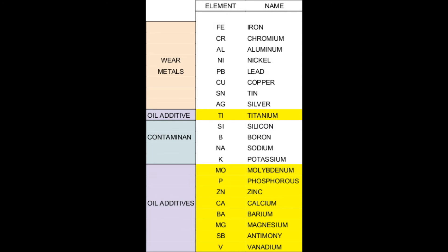The remaining elements seen on your report are typically considered oil additives. The most abundant additive elements are phosphorus and zinc, which are present in a compound known as zinc-dialkyldithiophosphate, or ZDDP for short, which acts as an anti-wear substance. Additionally, calcium and/or magnesium will be present in abundant quantities for their detergent and/or dispersant properties. Typically, one will be in a greater quantity than the other.